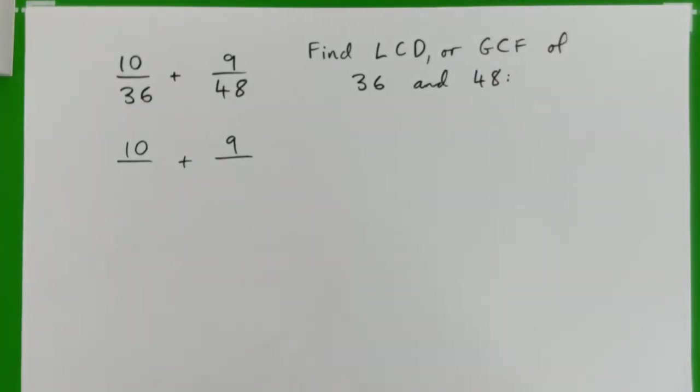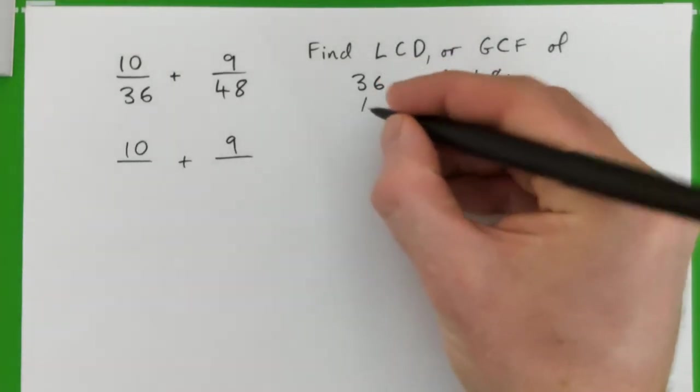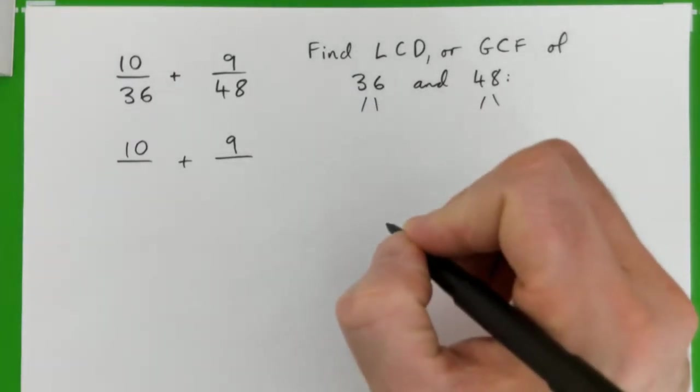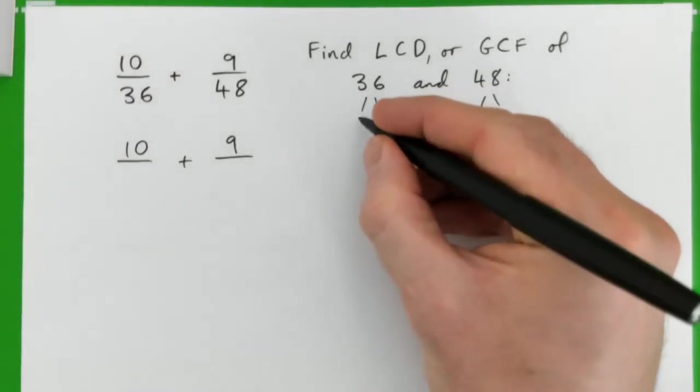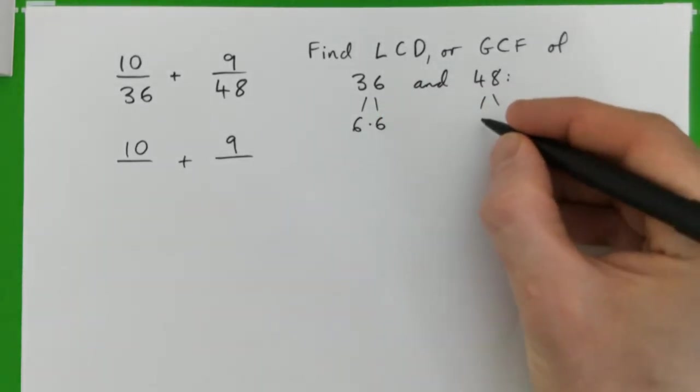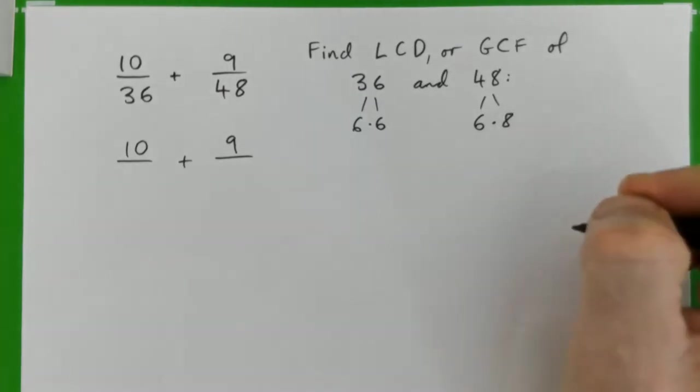So essentially we can just factorize each number. So give me some factors of these guys. 36 is what? Well, you could say 6 times 6. 48 is 6 times 8.